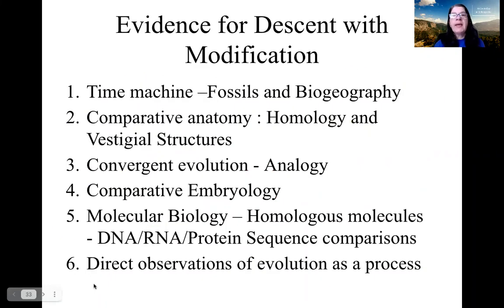So what is the evidence for descent with modification, or the overwhelming evidence for the theory of evolution? One is the time machine — we're able to go back in time by examining fossils and biogeography. Two would be comparative anatomy, noticing homology in structures among living organisms, as well as vestigial structures.